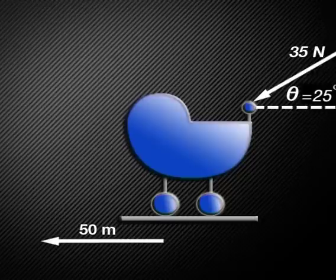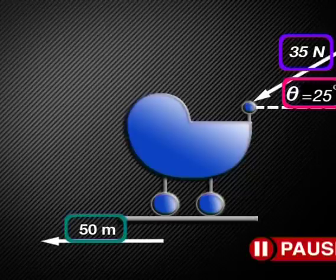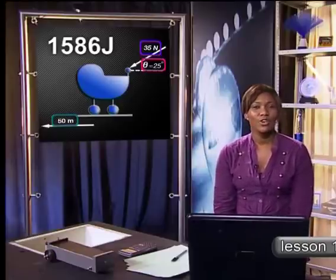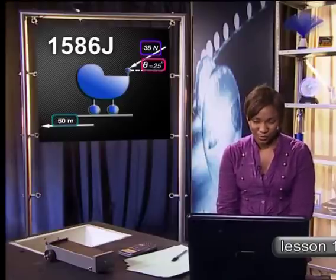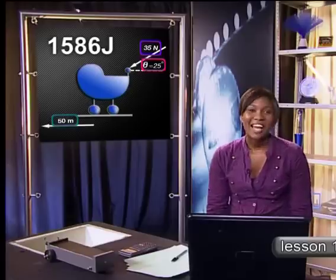Now try an example on your own. A shopper in a supermarket pushes a trolley with a force of 35 Newtons directed at an angle of 25 degrees downward from the horizontal. Find the work done by the shopper as she moves down a 50-metre aisle. The answer is 1,586 joules. Now, does the word scalar sound familiar? A scalar is something that only has magnitude and no direction. Mathematically, work is the scalar product of force and displacement. A scalar quantity in physics has magnitude only, not direction. The product of two vectors always produces a scalar quantity.